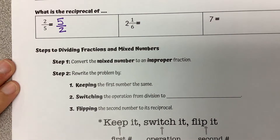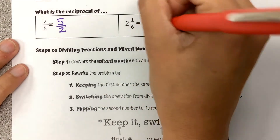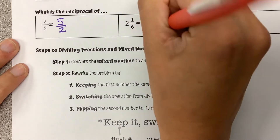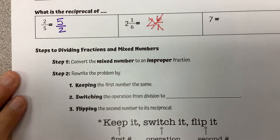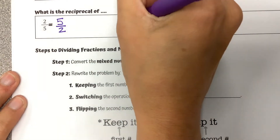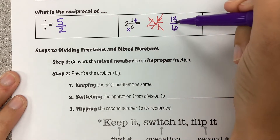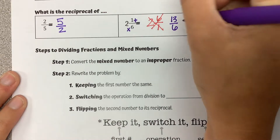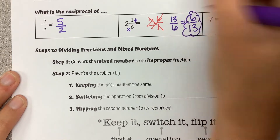For this one, I'm first going to write the incorrect reciprocal. A lot of times people will think they just flip around the fraction part, so it becomes 2 and 6 over 1. That is incorrect. The actual thing we need to do first, thinking back to previous lessons, is turn this into an improper fraction first. So we do 2 times 6 is 12, 12 plus 1 is 13 over 6. Now we have two numbers we can flip — 6 goes on top, 13 goes on the bottom.